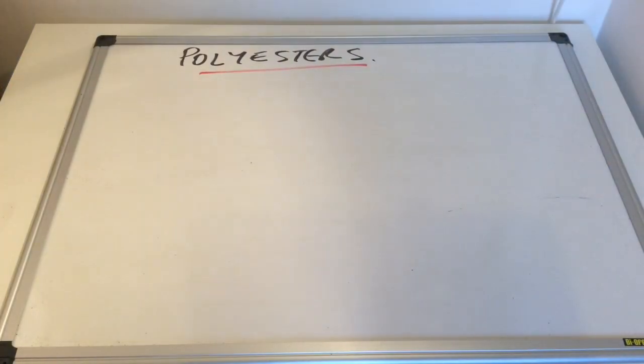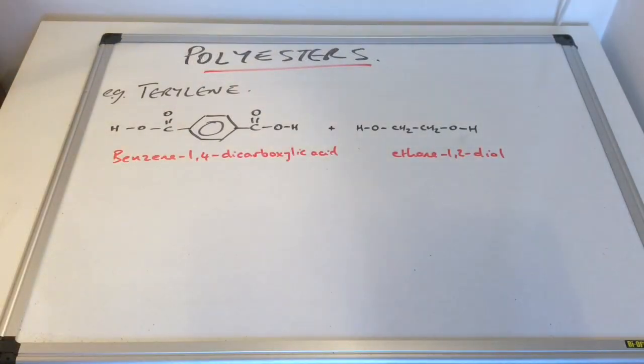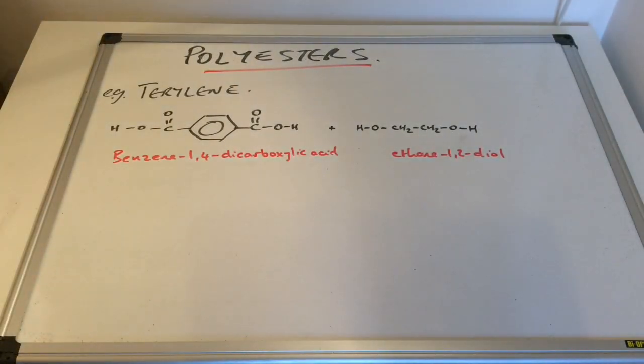In this video I'm going to take a closer look at some specific examples of polyesters. So the first example we'll look at is something called Terylene.